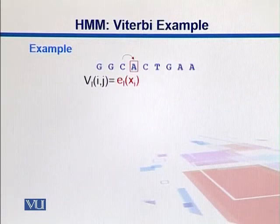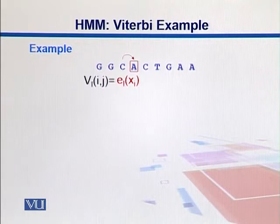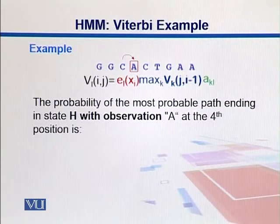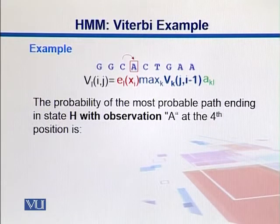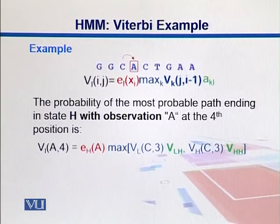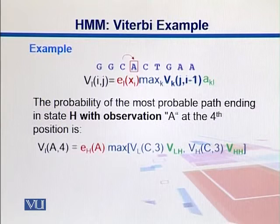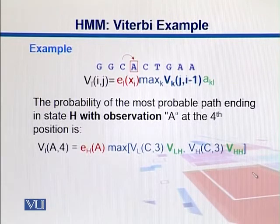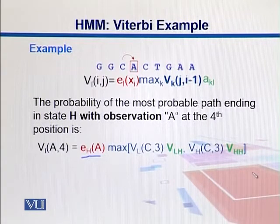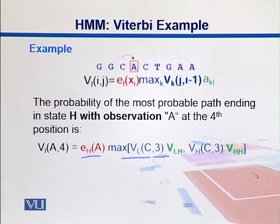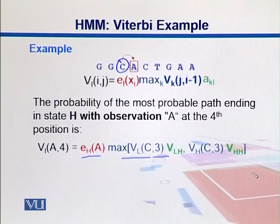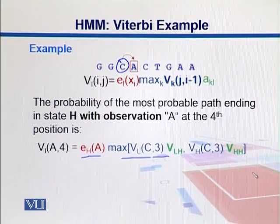Let's elaborate with this example. Right now we're at position 4, looking at symbol A. The probability of the most probable path ending in state H with observation A at the fourth position is VH(A,4) equals EH(A) times maximum of either coming from state L or state H. At position 3, we observe element C. Whether this C is coming from state L or H, we can take those two probabilities.